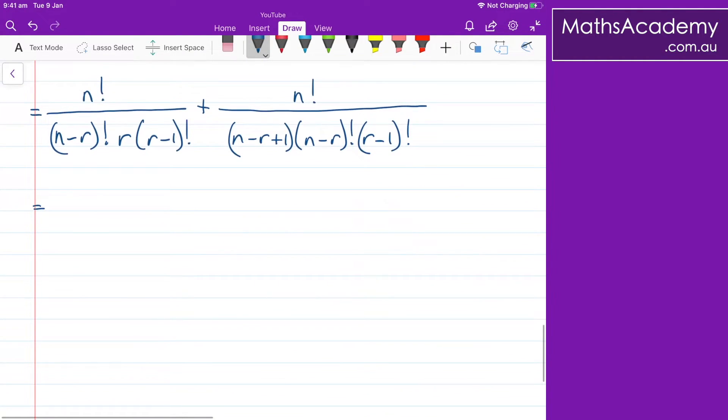So the next step is just to add these two fractions. The easiest way to do this is to highlight what is common in both denominators. I've got the n minus r factorial and the r minus one factorial in both. Then all I need to do is take the left hand numerator and multiply it by whatever is left in the denominator of the right hand side, which is the n minus r plus one. And for the right hand side numerator, I multiply by whatever is left in the denominator of the left hand side, which is just r.